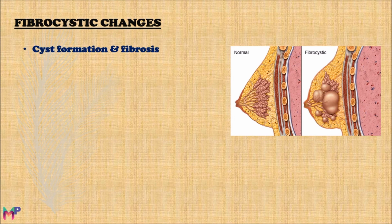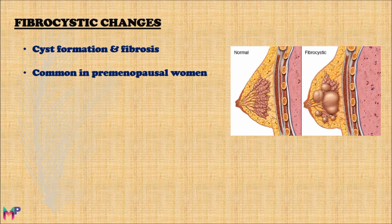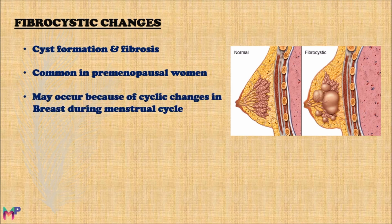Fibrocystic changes are mostly seen in pre-menopausal women because changes in estrogen level may cause their development in the breast. They may occur because of cyclic changes during the menstrual cycle. However, estrogen therapy and oral contraceptives do not seem to increase the incidence of fibrocystic changes; rather, oral contraceptives may actually decrease the risk of fibrocystic changes development.